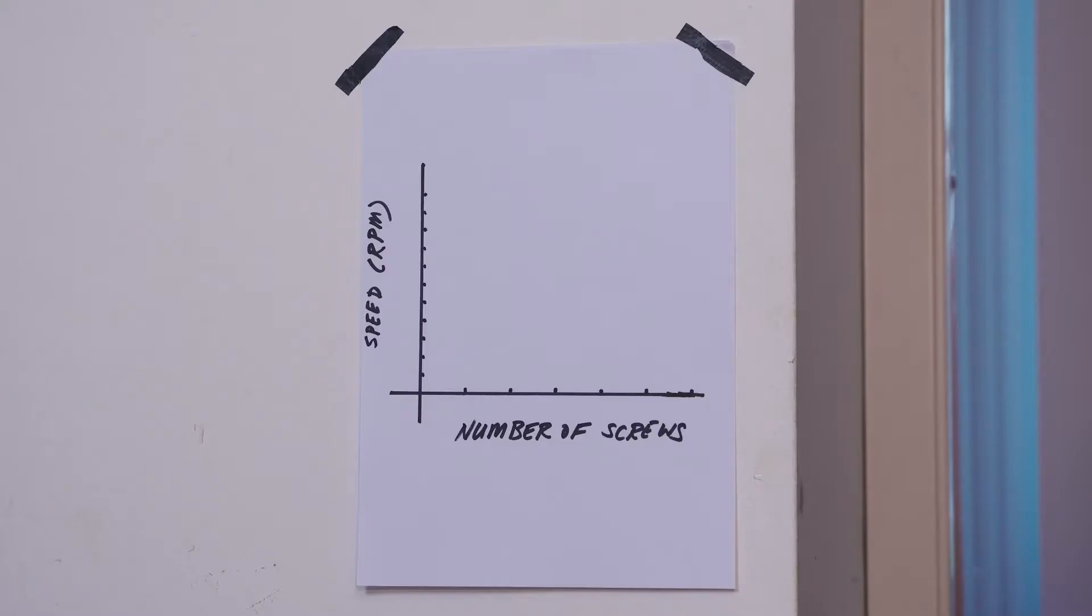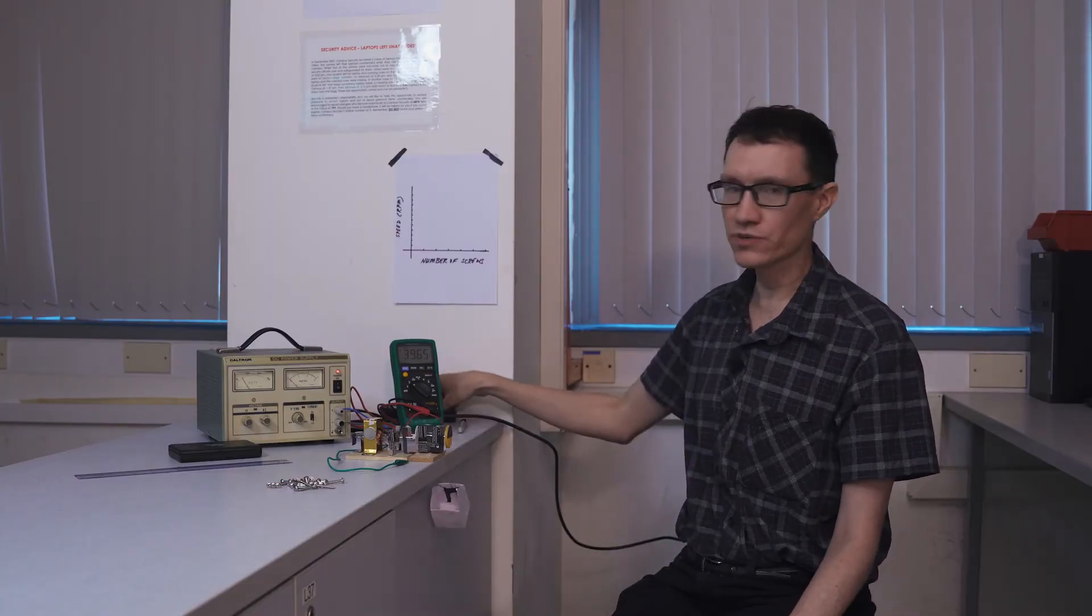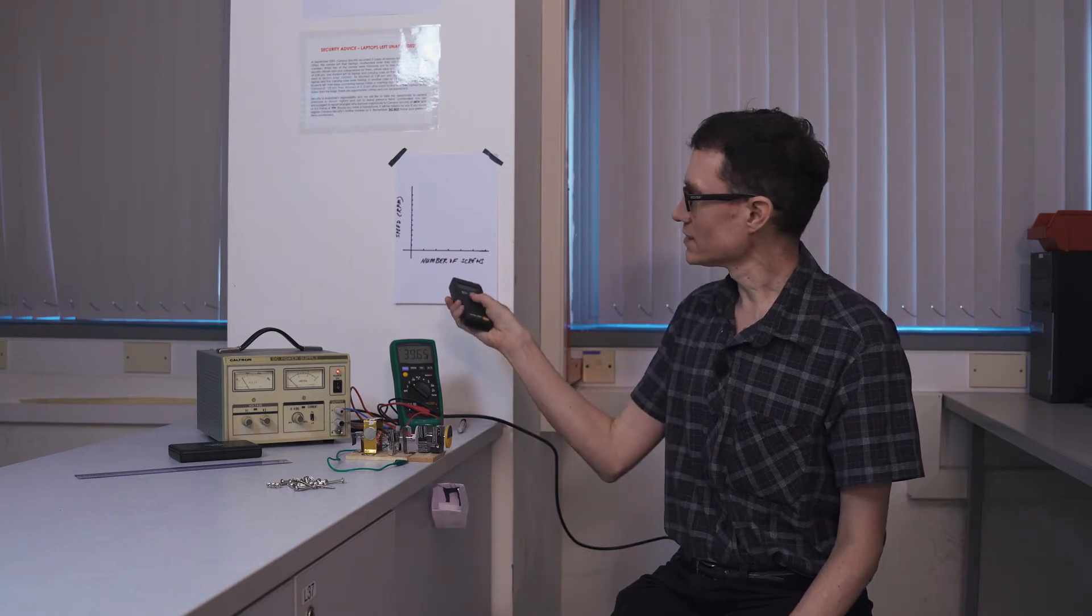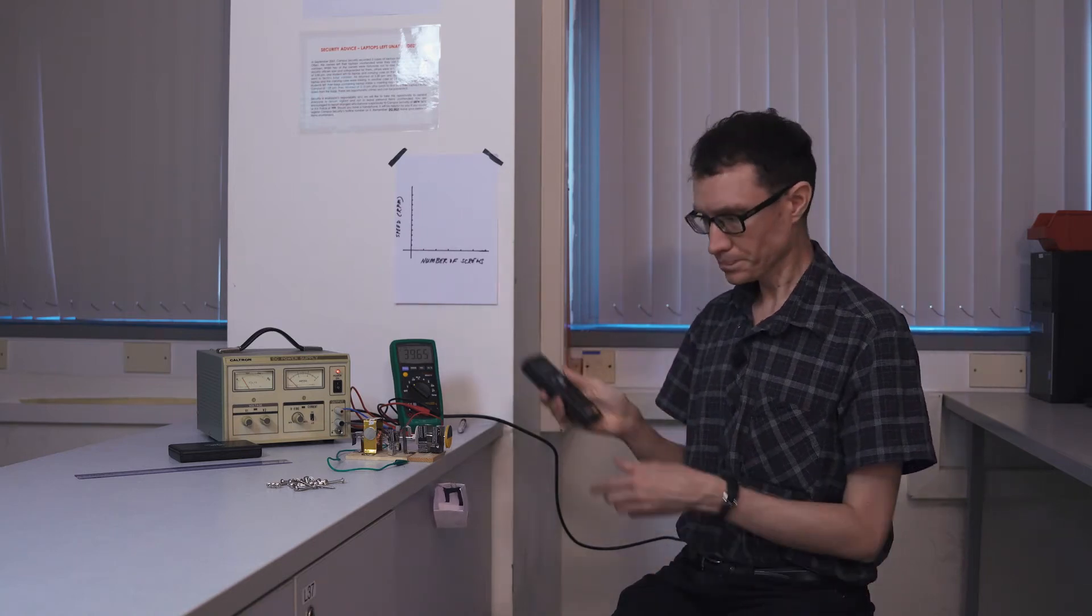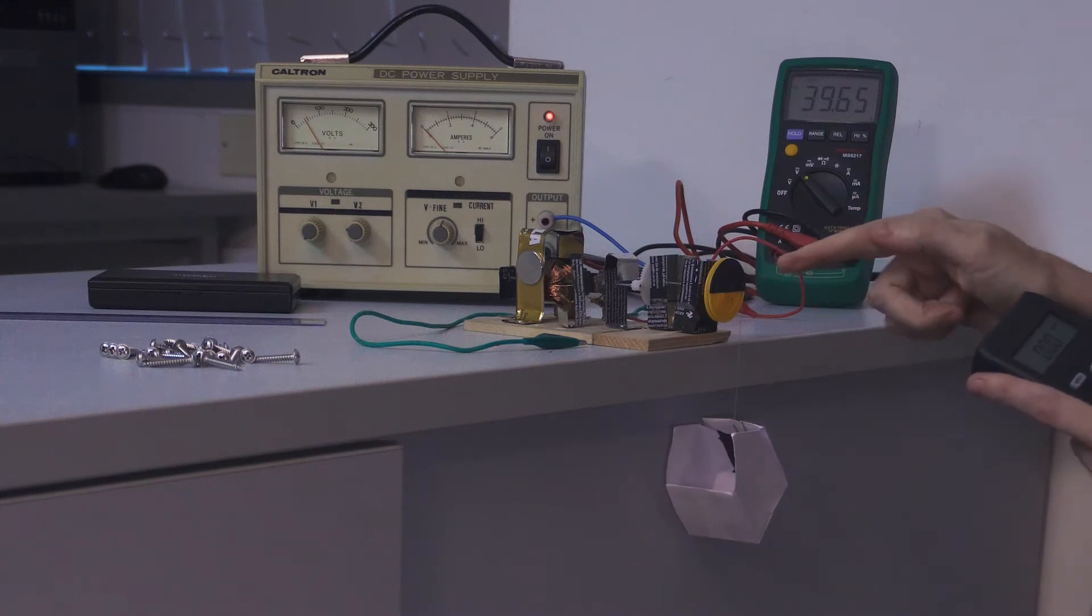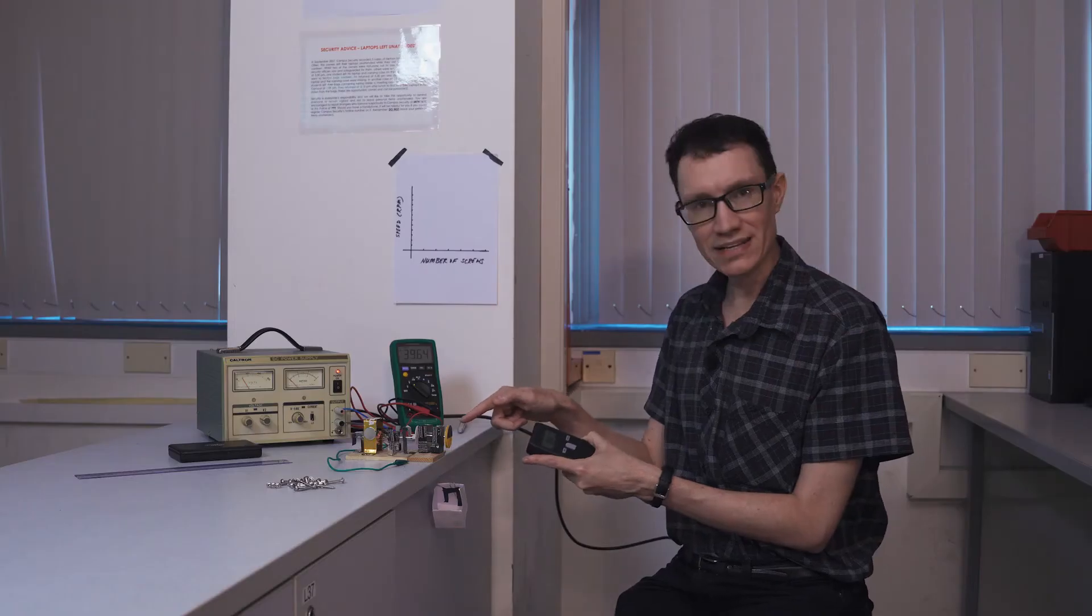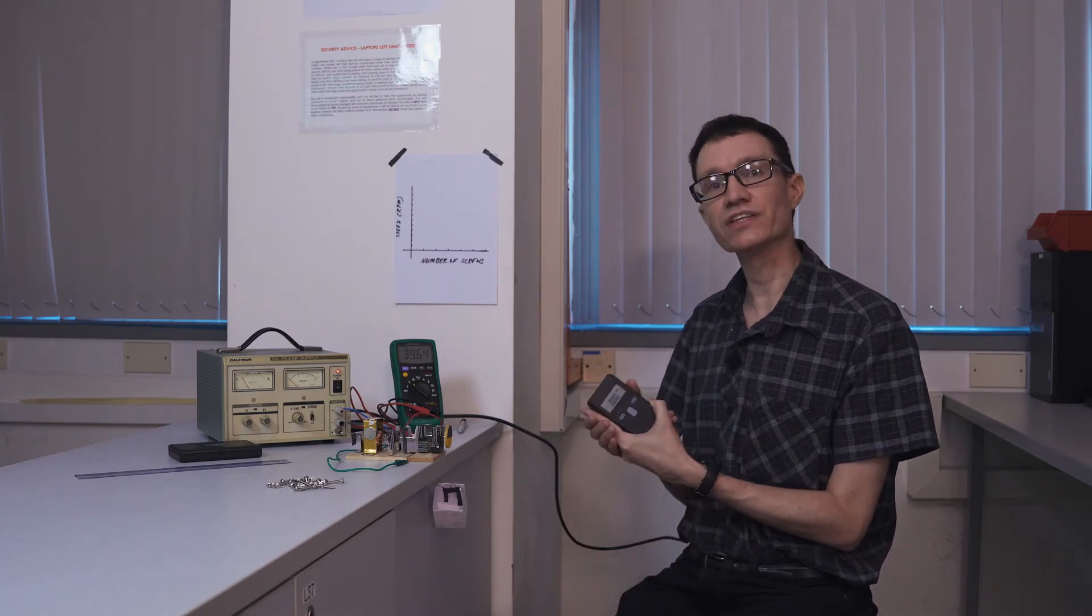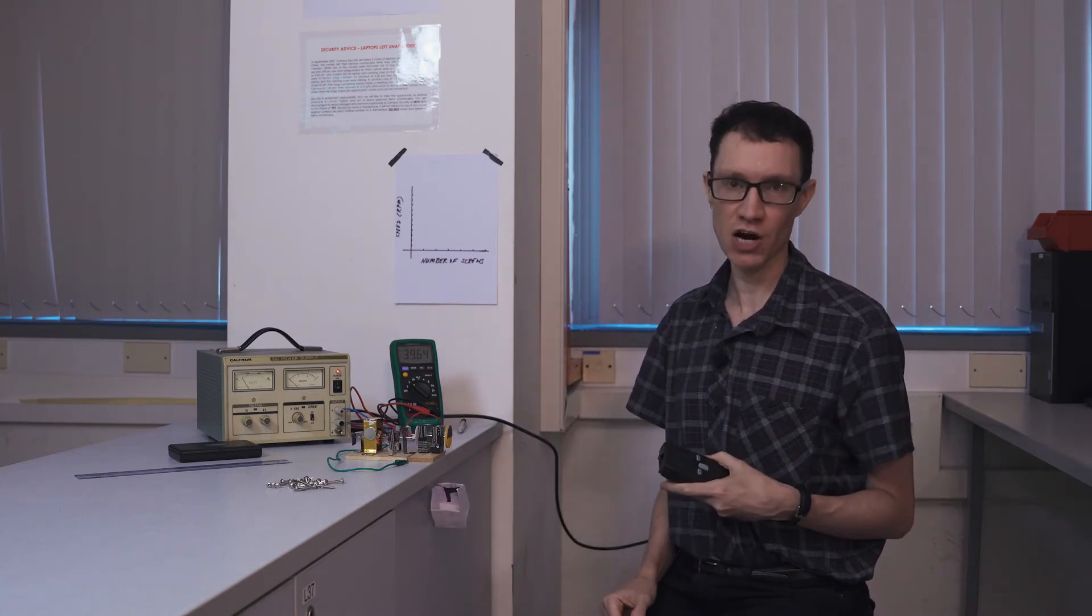Now, we're interested here in the speed of the motor versus the number of screws that I put into this little bucket. In order to measure the speed of the motor, I'll be using a device called a tachometer. This has a little laser inside of it, basically an optical sensor, and I've placed a piece of black tape covering half of the pulley. The black tape can provide a good optical contrast for this sensor, which can then give us a nice measure of RPM of the motor.